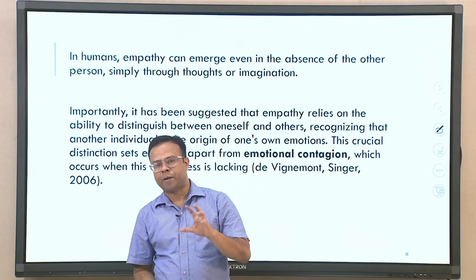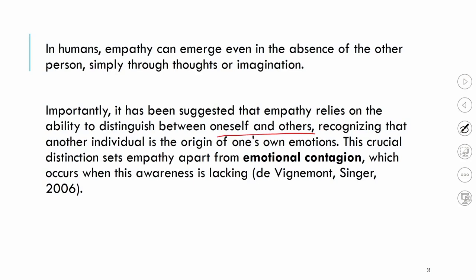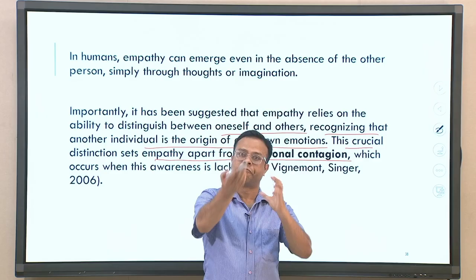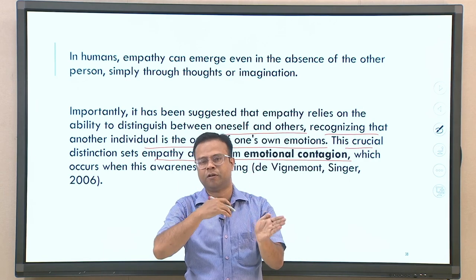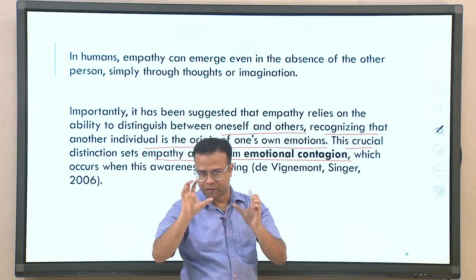It is important to note that empathy relies on the ability to distinguish between oneself and others. You realize the emotion you are feeling is directly coming from another person's emotional experiences — recognizing that another individual is the origin of one's emotions. This crucial distinction sets empathy apart from emotional contagion. In emotional contagion, you may not even be conscious that others' emotions are influencing you. In empathy, it is more conscious — you are aware that your emotion is arising on behalf of another individual.